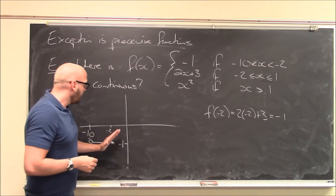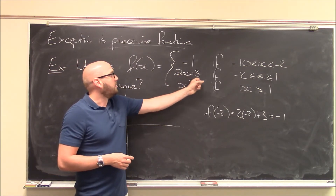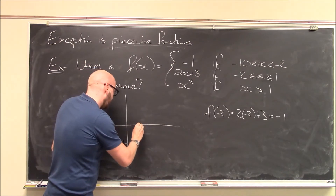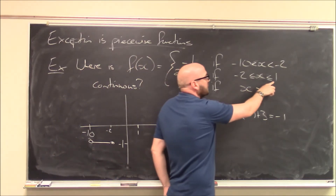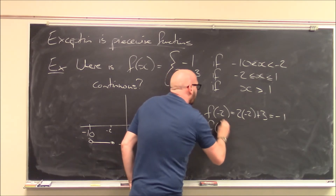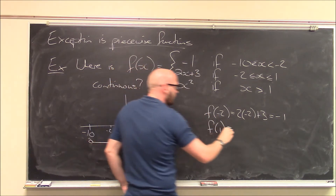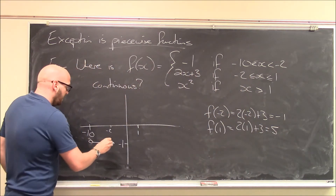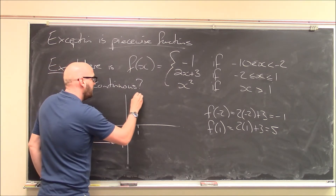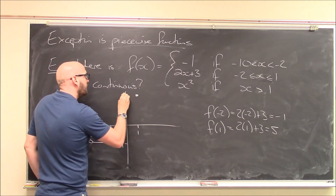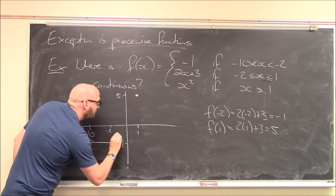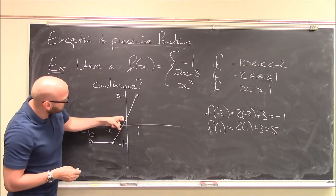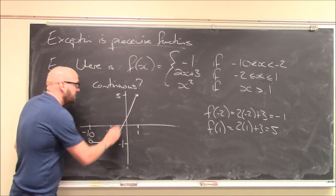Then it's a linear function with slope 2 and y-intercept 3. Because it's a straight line, all I need is the function value at the other endpoint. At x equals 1: f of 1 is 2 times 1 plus 3, which is 5. So the line goes from negative 1 up to 5. I'm not drawing to scale — the y-intercept should be 3 — but it's a straight line connecting those two points.